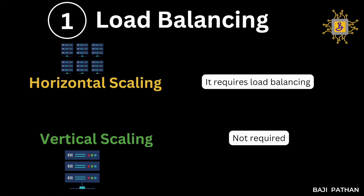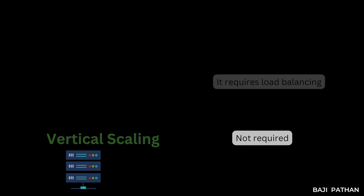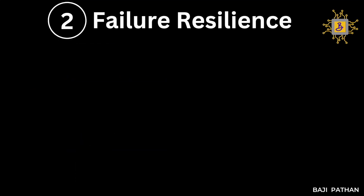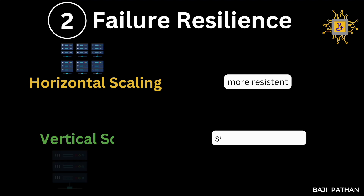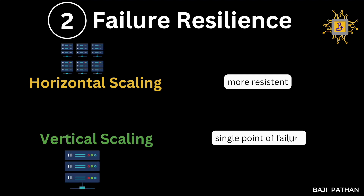Load balancing is not required for vertical scaling. The second factor is failure resilience. In horizontal scaling, it is more resistant because we have multiple machines to handle the load — even if one system goes down, we have other machines to take over. In vertical scaling, it is a single point of failure, and if that machine goes down, users may not have access to the application.